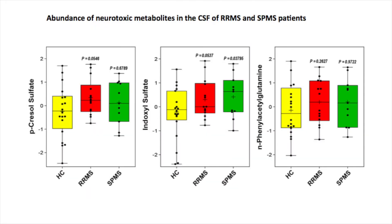Here you can see the box plots of the relative abundance of each individual red module metabolite among the different groups in our study, which are healthy controls (HC), relapsing-remitting, and secondary-progressive MS patients. Of note, the MS patient values plotted here are from the baseline CSF samples prior to DMF treatment.